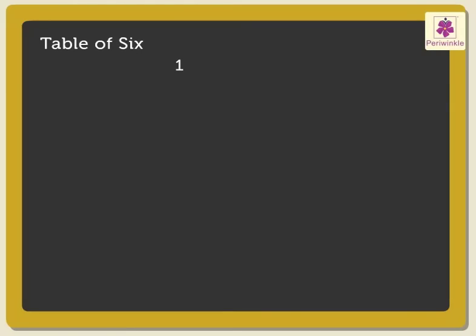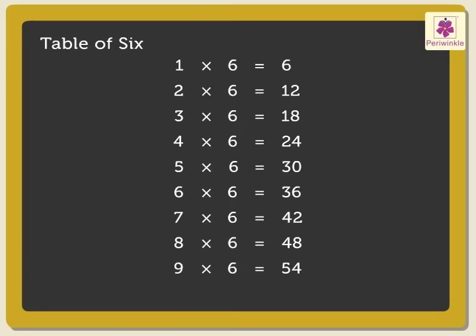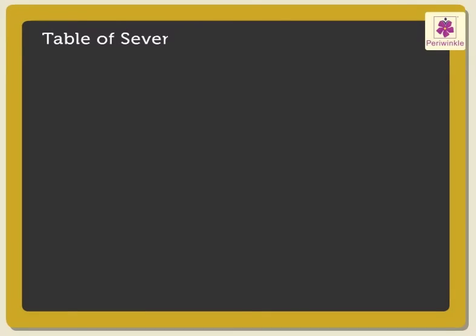Now the table of 6. 1 six is 6. 2 sixes are 12. 3 sixes are 18. 4 sixes are 24. 5 sixes are 30. 6 sixes are 36. 7 sixes are 42. 8 sixes are 48. 9 sixes are 54. 10 sixes are 60.